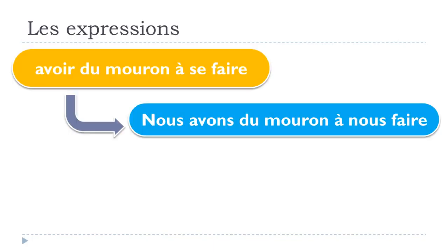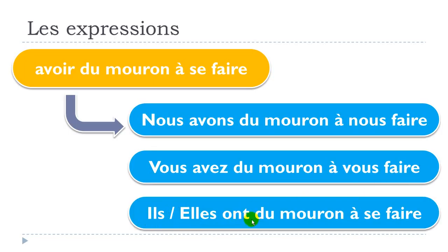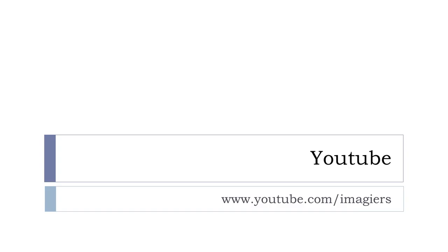For the plural forms, the expression is still the same. Nous avons du mouron à nous faire. Vous avez du mouron à vous faire. And ils/elles ont du mouron à se faire. Remember: use NOUS for the first person plural, VOUS for the second person plural, and SE for the third person plural. Well, that's it — have a great day, au revoir et à bientôt!